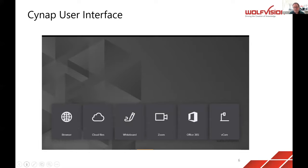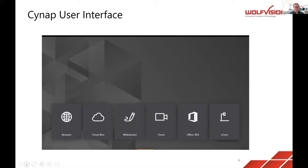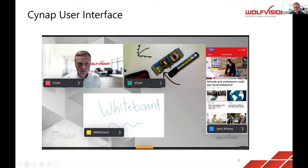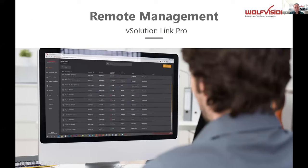On the touch monitor, the lecturer sees an array of buttons to touch and activate functions. You can add and name any functions — a laptop, a room camera, and so on. By touching those buttons, the presenter can activate a whiteboard, show content from a visualizer, show live content, share from an iPhone, or launch a web conference.